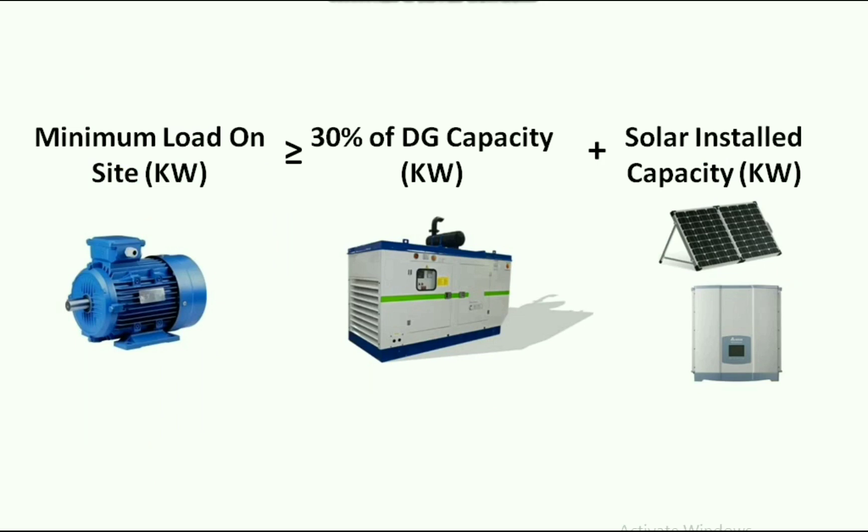We can derive a formula that must be satisfied to sync a DG with solar. The formula is: minimum load on site should be greater than or equal to 30% of DG capacity plus solar plant capacity. If a system satisfies this condition, the DG will sync normally with the solar plant.